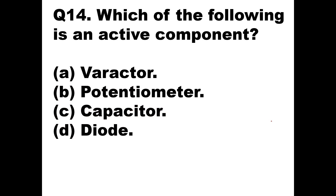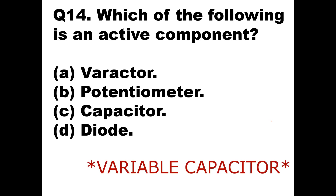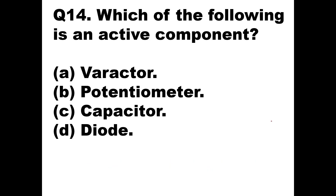Question 14: Which of the following is an active component? A varactor is passive, a potentiometer is passive, a capacitor is passive, but a diode is an active component. So out of the four options, diode is the correct answer — Option D — and it is an active component.